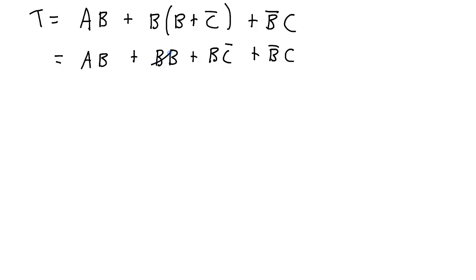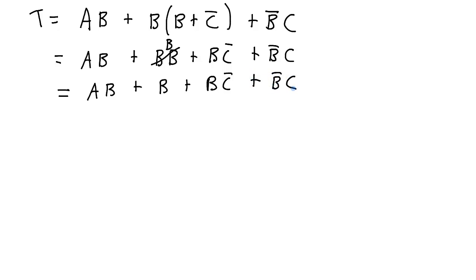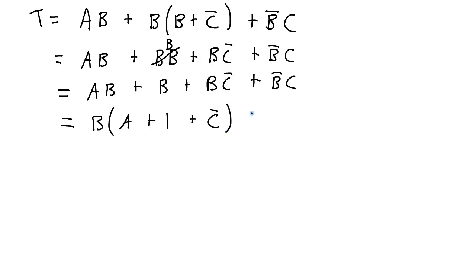b ANDed with b is simply b. So rewriting the expression: ab ORed with b, ORed with b AND NOT c, ORed with NOT b AND c. Looking for common factors, there's a common b through three of these terms. Factoring b out of the first term leaves a; factoring b out of the second leaves 1; factoring b out of the third leaves NOT c. Then we still have NOT b AND c remaining.